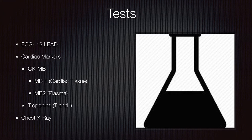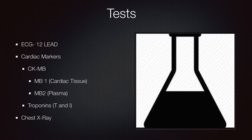When looking at the causes of chest pain, there are certain tests you need to do to help figure out the puzzle pieces and understand the underlying condition. You'll order a 12-lead EKG. There are blood markers such as CKMB — specifically MB1, which is specific for cardiac tissue, and MB2, which is found in the plasma — as well as troponins T and I, and chest x-rays.